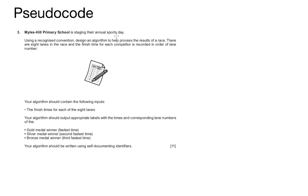Miles Hill Primary School is staging their annual sports day. Using a recognized convention, design an algorithm to help process the results of a race. There are eight lanes in the race and the finish time for each competitor is recorded in order of lane number. Your algorithm should contain the following inputs: the finish times for each of the eight lanes. Your algorithm should output appropriate labels with the times and corresponding lane numbers of the gold medal winner (fastest time), the silver medal winner (second fastest time), and the bronze medal winner (third fastest time). Your algorithm should be written using self-documenting identifiers. The total for this question is 11 marks.